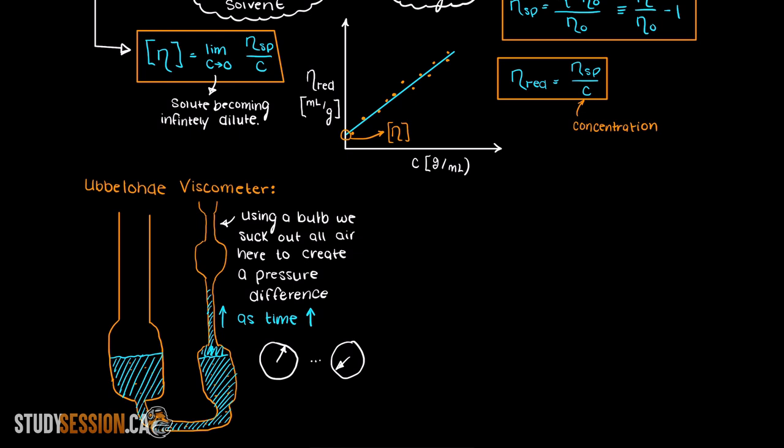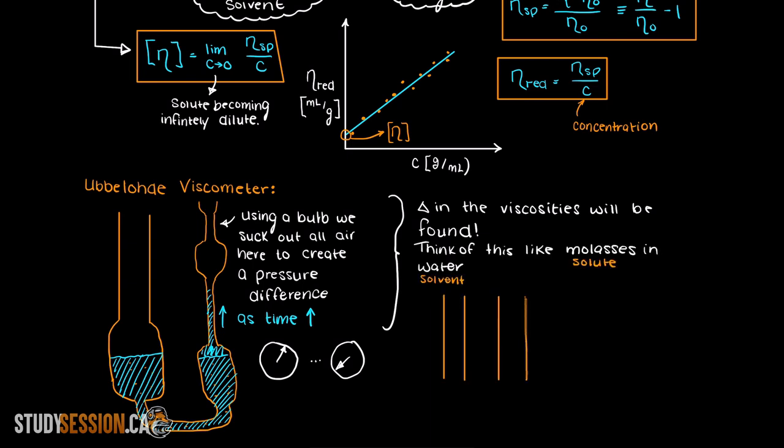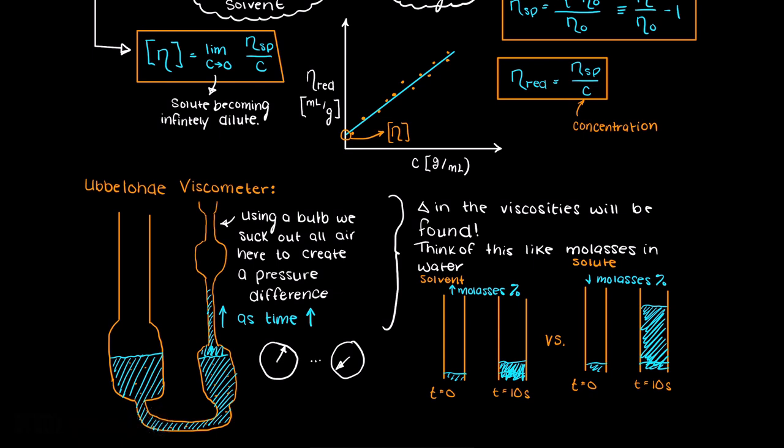Therefore, through performing several of these tests using various concentrations of our solute, we will notice changes in the viscosity, depending on how much solute is added. Think of this like adding molasses to water. Molasses has a very high viscosity, meaning that it takes a lot of force to move it. The more molasses, our solute, we add to our solvent, the water, the more change we will observe in our time it takes for the solution to climb the capillary.